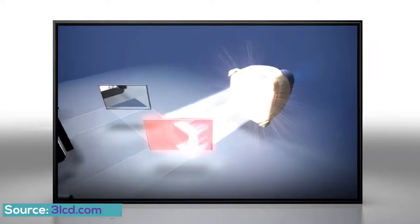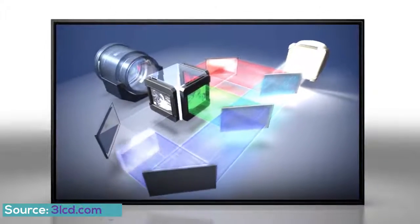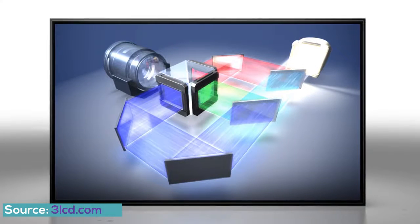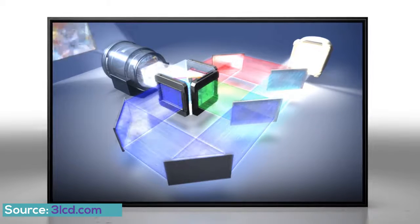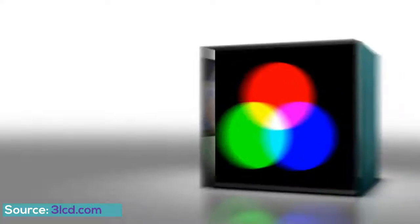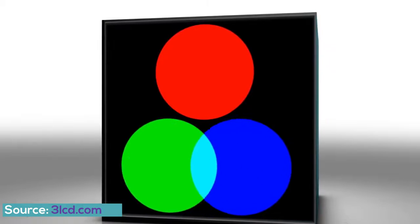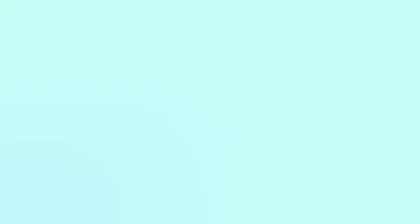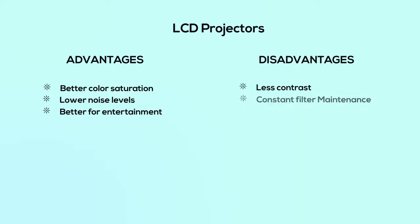LCD projectors use liquid crystal displays, so no moving parts are involved while projecting. Even within the LCD category, you can find one-chip and three-chip LCDs. Single-chip LCD is the most basic type, used mostly on inexpensive projectors. Three-chip is a more sophisticated type — it offers better color saturation, lower noise levels, and works better for movies. However, LCD projectors output less contrast and require constant filter maintenance, so there is a fair trade-off.